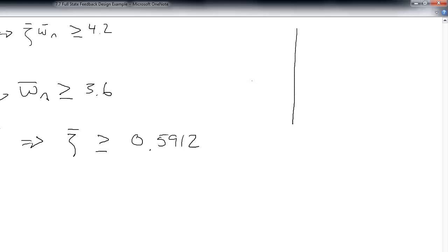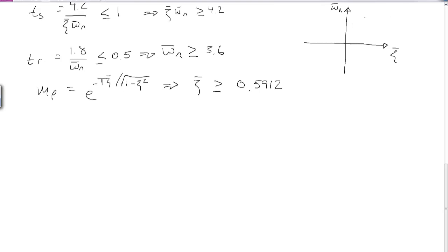We can visualize this by plotting the natural frequency and the damping ratio required on a Cartesian grid. Zeta has to be greater than 0.59, so here's 0.5912. This area is not in the design space. Omega n has to be greater than 3.6, so anything below that is not in the design space. Finally, this requirement relates zeta and omega, and that's some function that comes down like this. So anything down here wouldn't be in the design space. Any values of zeta and omega n that are up here will achieve these performance requirements.